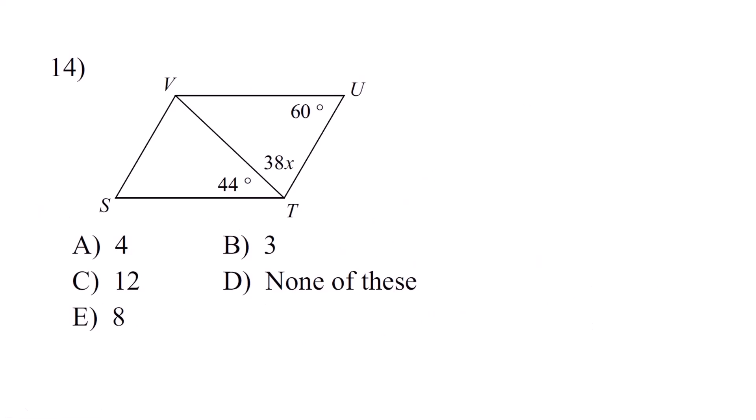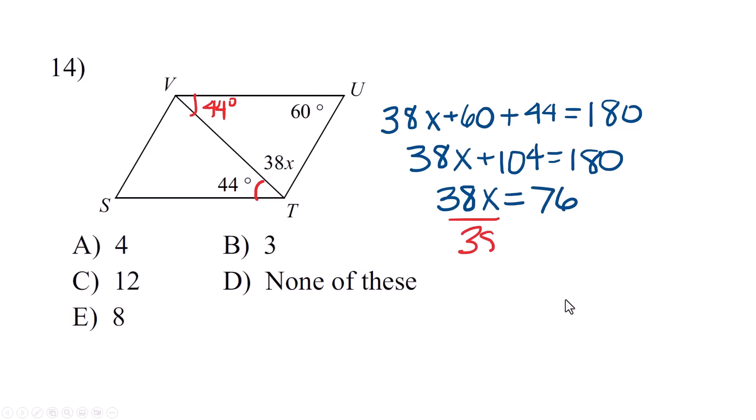For number 14 you need to be a little bit clever. You do still have parallel lines in a transversal, which means this angle 44 is also this angle 44. Here's a parallel line, here's a parallel line, there's the transversal. Now when you look at the top of this and pretend you're not looking at a parallelogram, but it's just a triangle, and if you remember all the angles inside of a triangle add up to 180. So we're going to add everything together and set it equal to 180. Let's simplify. 38x plus 104 equals 180, subtract the 104, and divide by 38. And we get 2, which is another none of these. Yeah, I know, I was mean to my kids. They had too many of those.